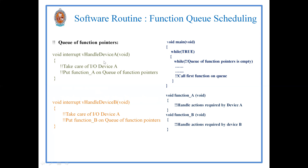Once device A requires service, you need to take care of it. In round robin with interrupts, you would set a flag to true to indicate that device needs service. But here, instead of setting a flag, you place a function pointer — function_A — onto the queue of function pointers. Similarly, if device B requires service, you place function_B onto the queue. So function_A and function_B are placed onto the queue for their respective devices.